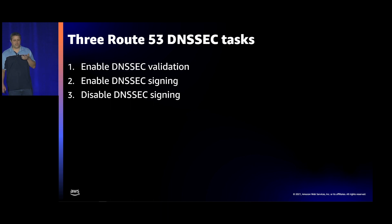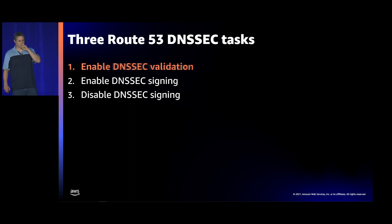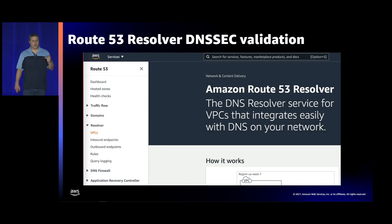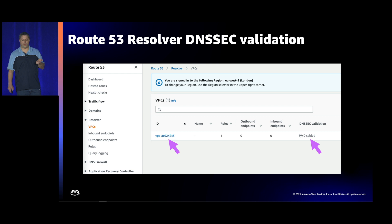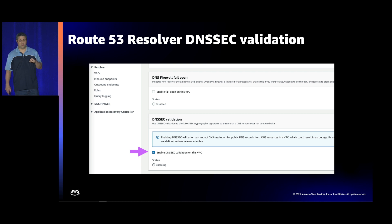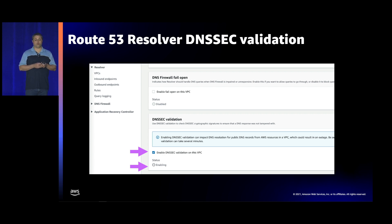Let's go through a few standard DNSSEC tasks. First: enabling validation in Route 53 Resolver so that signed domains on the internet are validated. This is straightforward — in the resolver console, under VPCs, you'll see a VPC with DNSSEC validation currently disabled by default. Click on it, tick the box to enable DNSSEC validation, and that's it. From then on, queries through that resolver will have DNSSEC validation turned on.